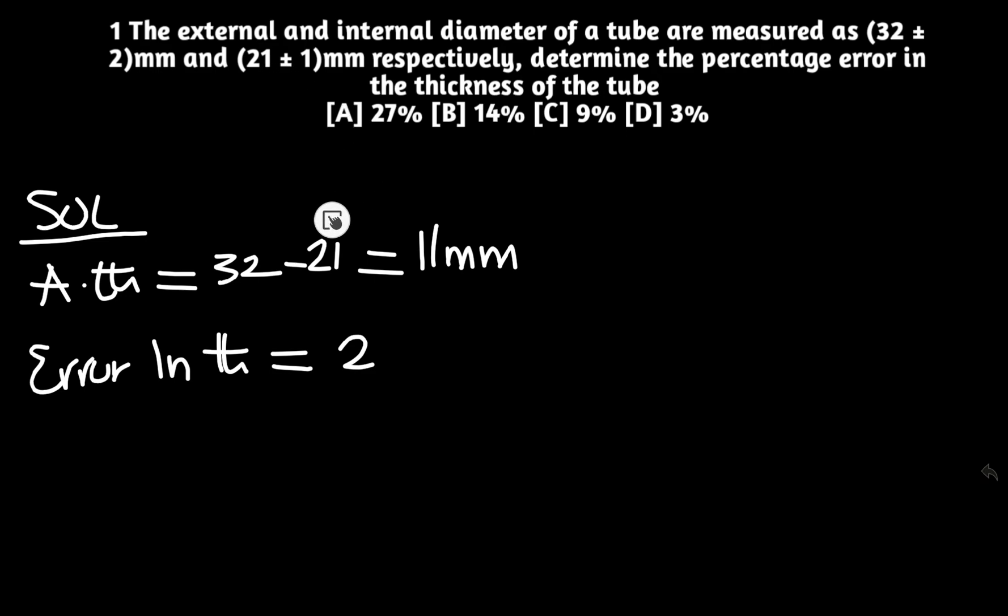So the 2 is with 32 while the 1 is with 21. Just as we say 32 minus 21, we'll say 2 minus 1. So it will be 2 minus 1.